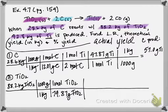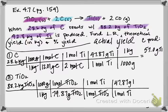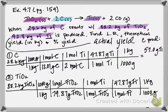From the balanced equation, 1 mole of titanium oxide produces 1 mole of titanium — both have a coefficient of one (understood). We place 1 mole of titanium oxide on the bottom and 1 mole of titanium on top. Moles of titanium oxide cancel, leaving moles of titanium. We then multiply by titanium's molar mass of 47.87 grams per mole and convert back to kilograms by dividing by 1,000. That calculation gives 52.9 kilograms of titanium from titanium oxide.